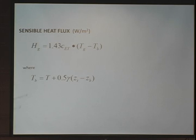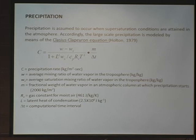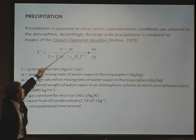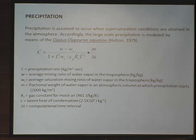We have the sensible heat flux in terms of the temperature gradient, and then precipitation. In the precipitation term, we are looking at planetary scale — only supersaturation conditions produce precipitation. Specifically, the mixing ratio must exceed the saturation mixing ratio in the atmosphere in order for any precipitation to occur.